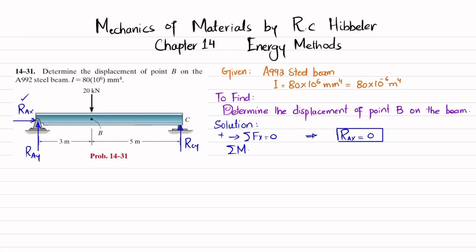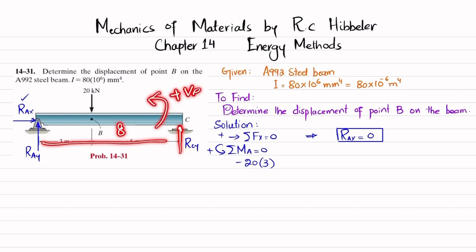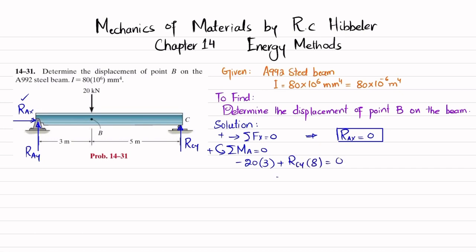Using the second equation, sum of all moments about point A equals zero, taking counterclockwise as positive. The moment due to the 20 kN load at a perpendicular distance of 3 m is clockwise, giving −20×3. The moment due to R_Cy at a distance of 8 m is counterclockwise, giving R_Cy×8 = 0. Solving: 8·R_Cy = 60, so R_Cy = 7.5 kN.